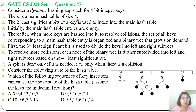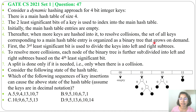First, there is a main hash table of size 4. Second, the two least significant bits of a key are used to index into the main hash table. Third, initially the main hash table entries are empty. Thereafter, when more keys are hashed into it to resolve collision, the set of all keys corresponding to a main hash table entry is organized as a binary tree that grows on demand. In chaining we store multiple keys as a linked list in a single slot; here we store them in binary tree format in a single slot.